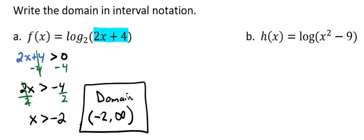And we're going to work it the same way. We're going to take our inside piece here, x squared minus 9, and we're going to set that greater than 0. And we're going to solve. So I'm going to add 9 to both sides, and that's going to give me x squared is greater than 9.